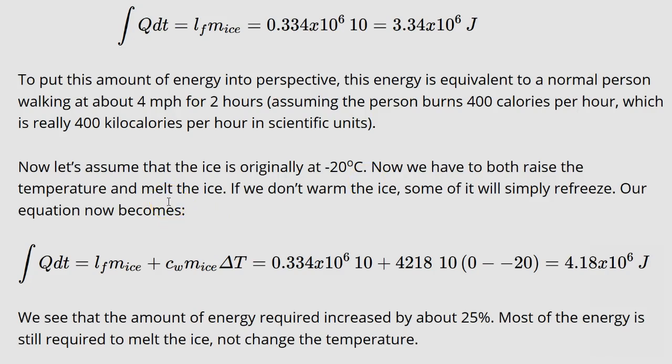We'll need to first raise the temperature of the ice to 0 degrees from minus 20 degrees C, and then we can melt it. So we'll need two terms in the equation. We add the second term, which accounts for the energy required to raise 10 kilograms of ice by 20 degrees C. It takes another million joules.